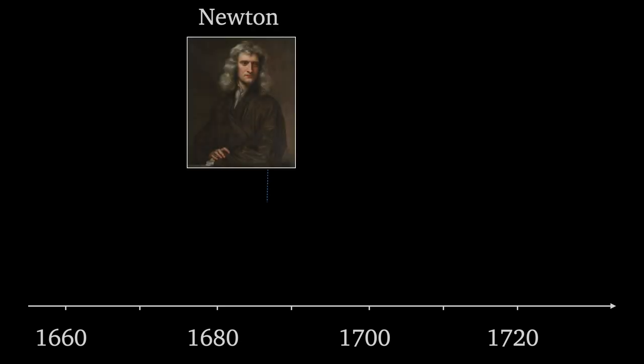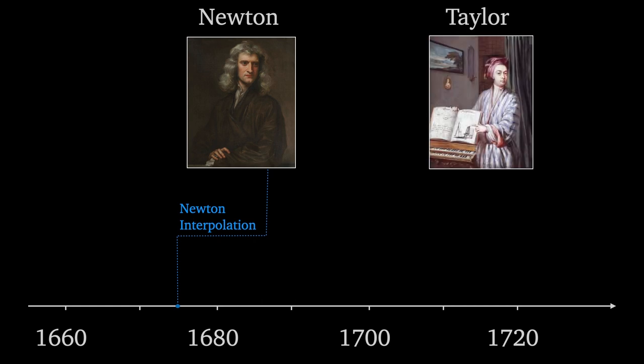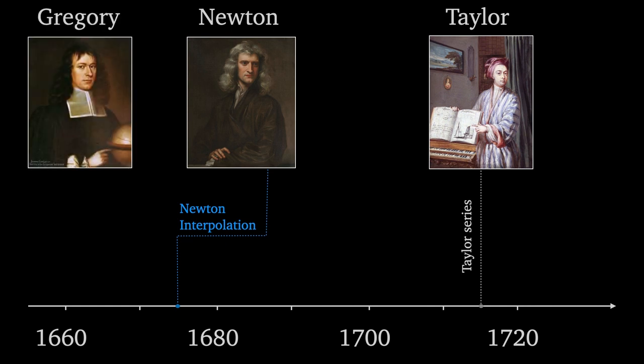Newton published his interpolation method in 1675, which would have given him 40 years to discover Taylor's method for himself. Brooke Taylor having published what we now know as Taylor series in his book Method of Increments in 1715. We'll be getting back to Newton shortly, but in the meantime we really need to talk about James Gregory and the Gregory-Newton interpolation formula.